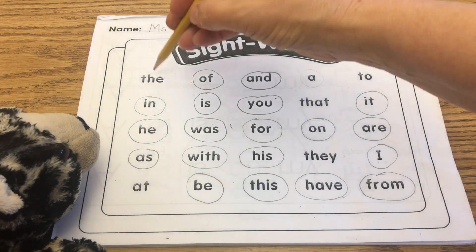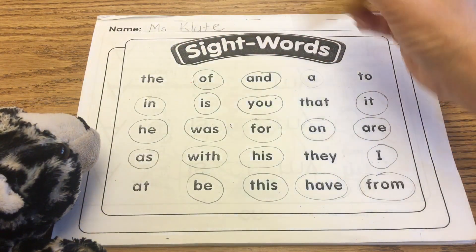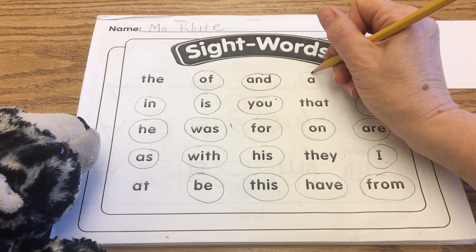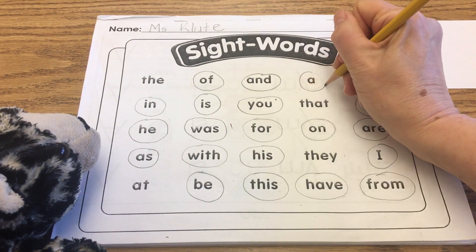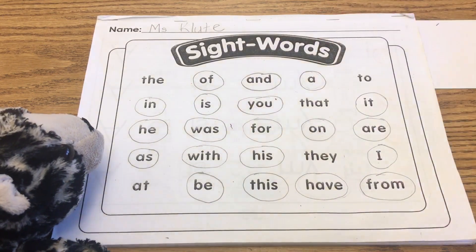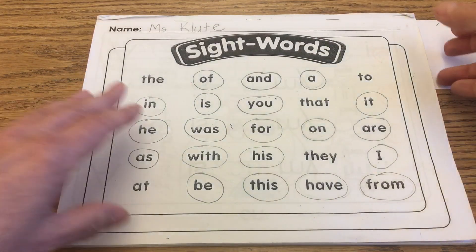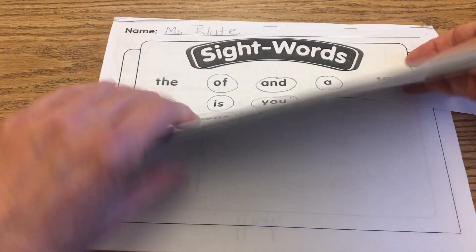The word A is one, two, three, four columns over. Go ahead and circle that and open your book.